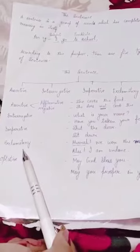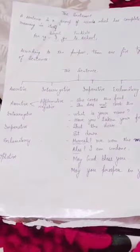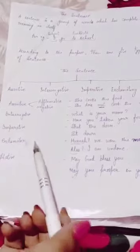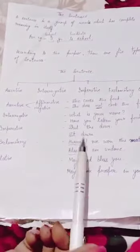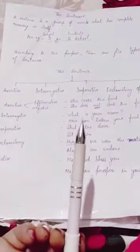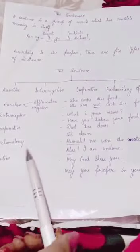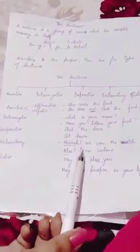The next type of sentence is exclamatory sentence. Exclamatory sentences are used to express strong emotions like grief, happiness, surprise, etc. It always ends with exclamation sign.